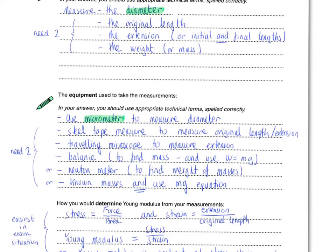Slightly obscure answer in there, to be honest, I felt when I saw that. But using a traveling microscope to measure the extension. And then we needed a balance or a Newton meter to find the weight of the masses.